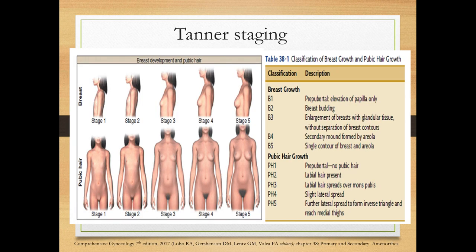This is Tanner staging for the breast, B1 to B5. B1 is pre-pubertal with elevation of the papilla only. B2 is breast budding. B3 is enlargement of the breast with glandular tissue without separation of breast contours. B4 shows a secondary mound formed by the areola. B5 is a single contour of the breast and areola — the breast has assumed the adult configuration.